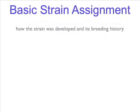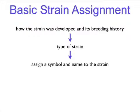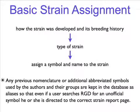When assigning a systematic nomenclature to a strain, we have to know the details of how the strain was developed and the history of breeding, which determines the type of strain. Then we use an established format to assign a symbol and name to the strain. Any old symbols or additional abbreviated symbols used by the authors and their groups are kept in the database as aliases, so that even if a user searches RGD for an unofficial symbol, he or she is directed to the correct strain report page.